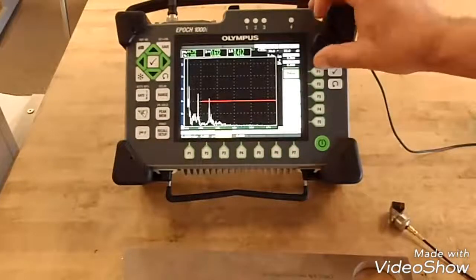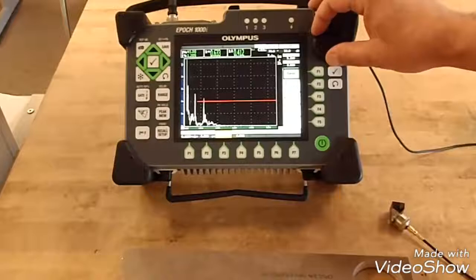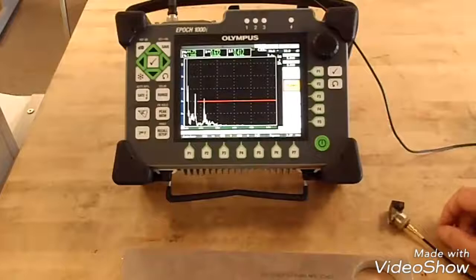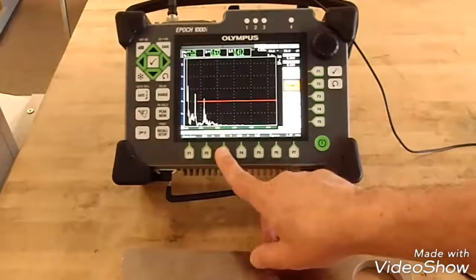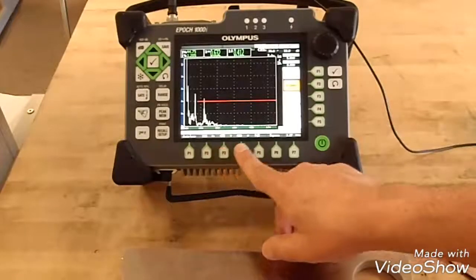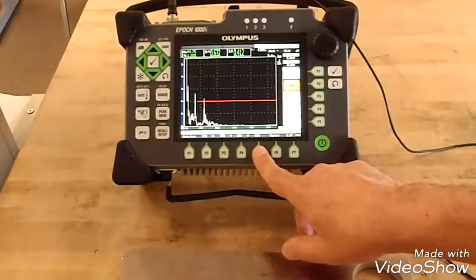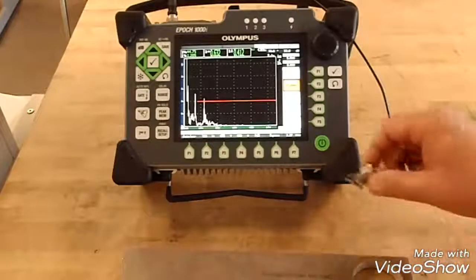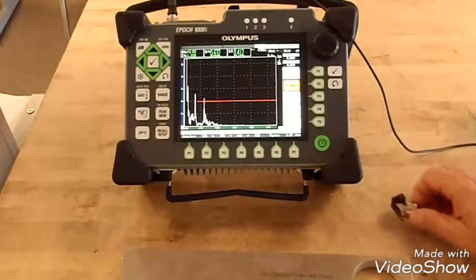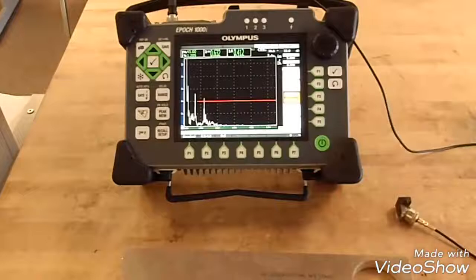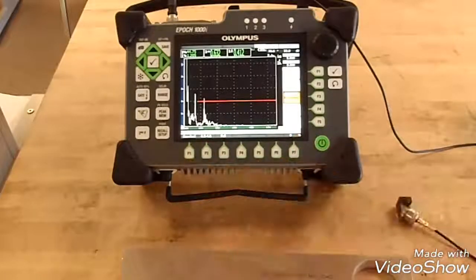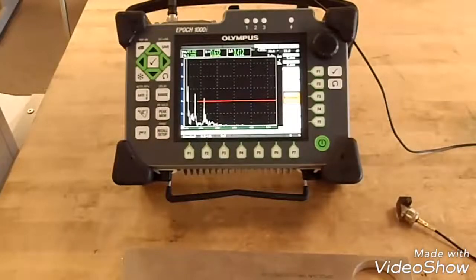Set your pulser to 475 volts. It's a pulse echo square wave. For two and a quarter megahertz, for the receiver: full rectification, zero rejection, and the filter of 0.5 to 4.